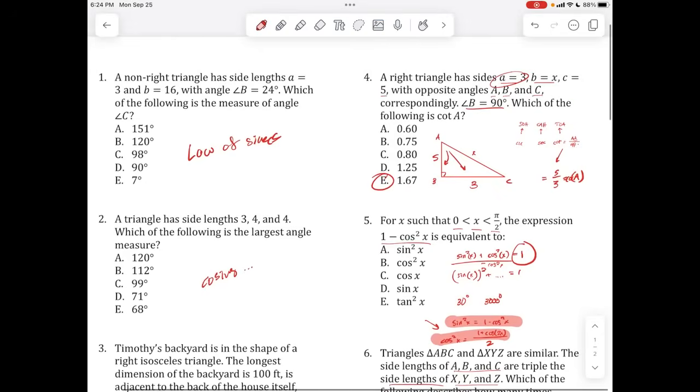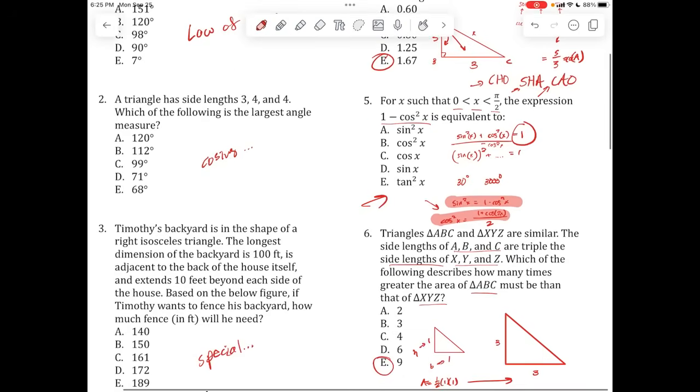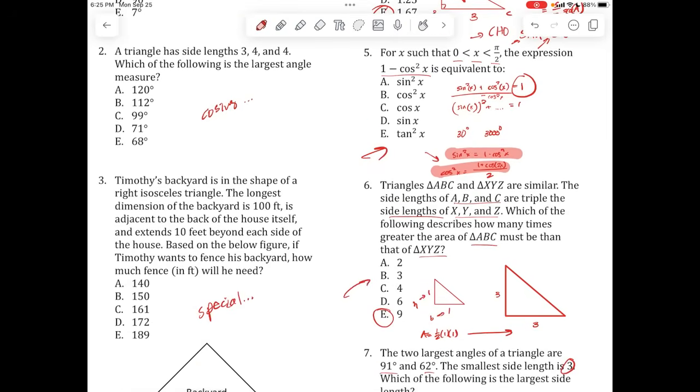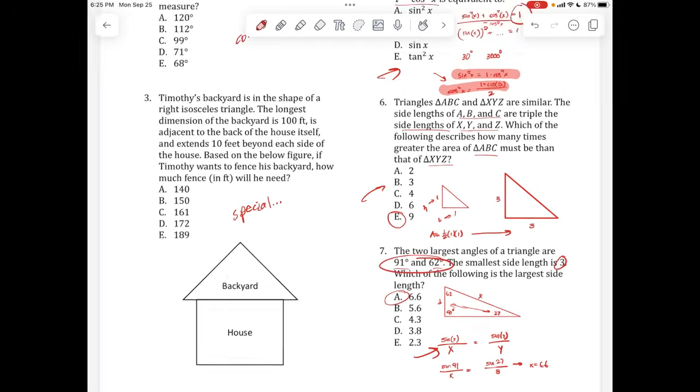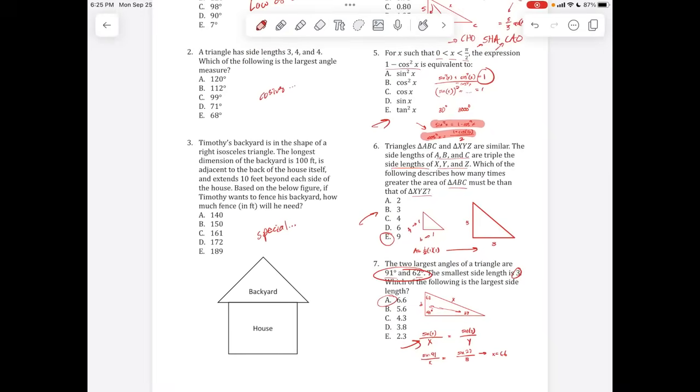This was SOHCAHTOA and CHOSHACAO, cosecant, secant, cotangent. Here we went through properties of triangles and sine and cosine. Here we went through similar special right triangles. And then this is just another law of sines problem, but just a little different taste, a little different flavor where you have to really use the knowns that you have and identify new knowns that can easily be calculated but might be also easily overlooked.